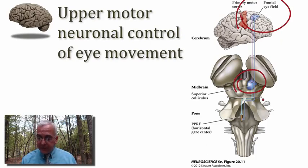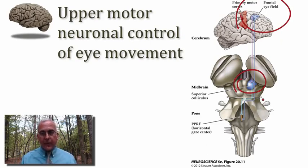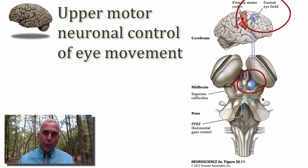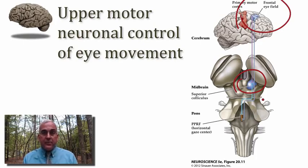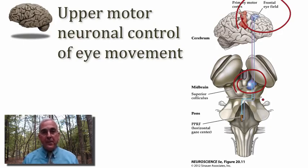What these two structures do is begin to fire just before the generation of a saccadic eye movement. That timing suggests they have a role in generating command signals about what kind of saccade to make — both in terms of the amplitude of the movement and the direction. What we find in both the frontal eye field and the superior colliculus is a motor map.